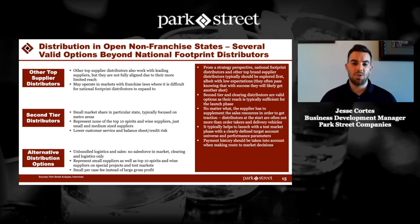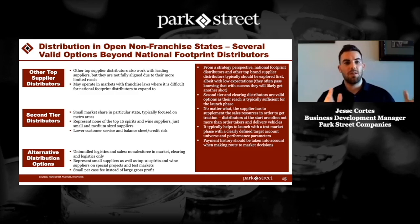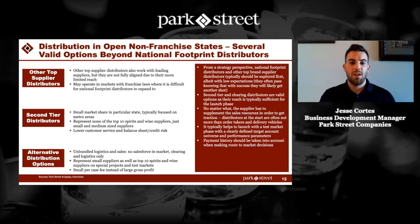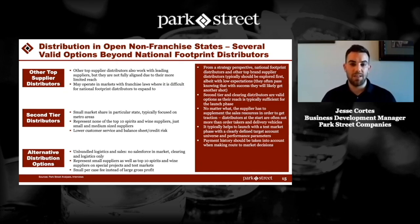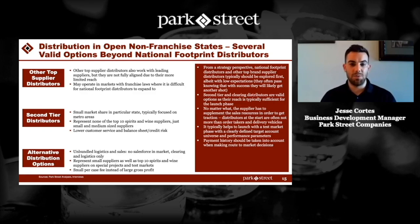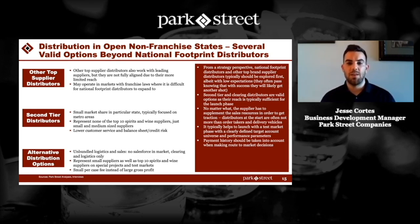Then you have alternative distribution options such as Park Street, where it's really an unbundled approach, meaning the logistics and warehousing, storage and deliveries, and order fulfillment are all separate from the sales. You actually control the sales. This is really beneficial, especially in the initial stages of a brand life cycle, in learning all about your consumers and defining that blueprint. You have more insight and can do more market research, and many times this can be more cost efficient than traditional distribution in the initial stages.